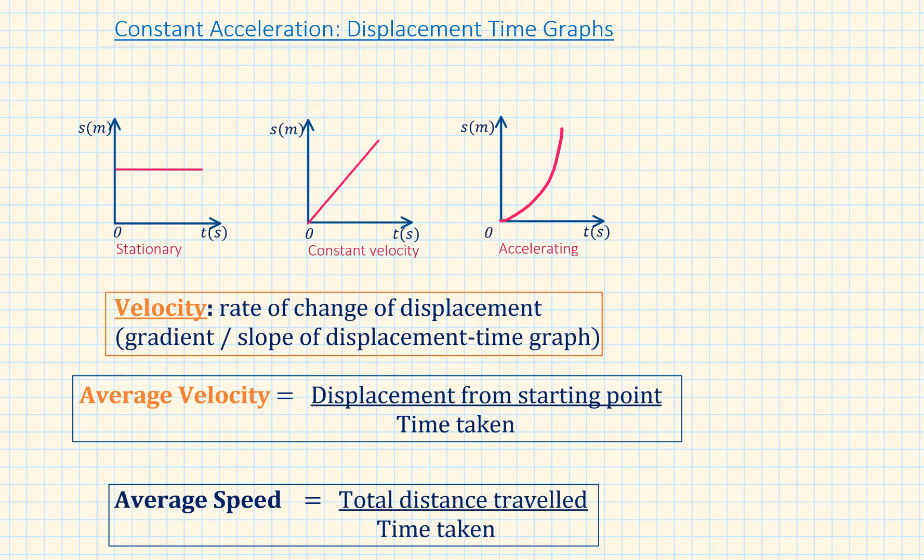Hi and welcome to this lesson on constant acceleration where we will cover displacement time graphs. We can represent the motion of an object on a displacement time graph. Displacement is always represented on the vertical axis and time is always represented on the horizontal axis. The lowercase s represents the displacement and lowercase t represents time.